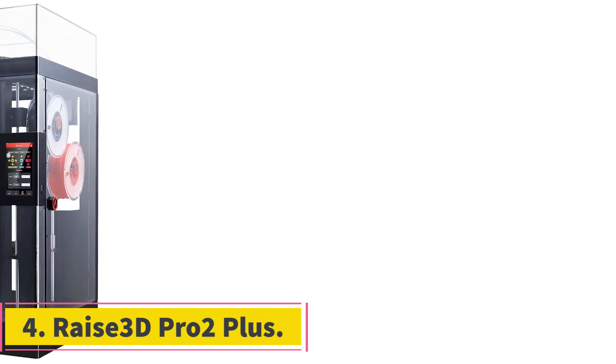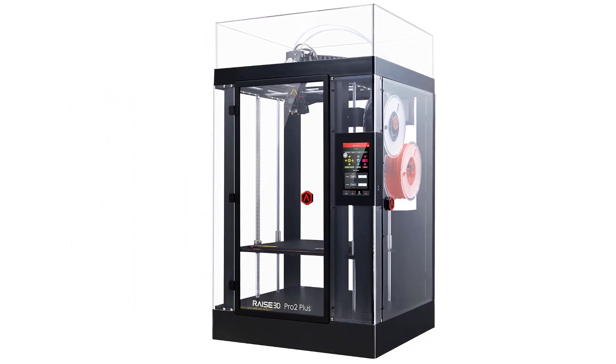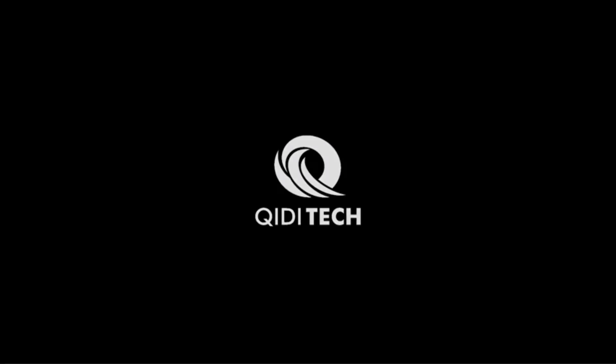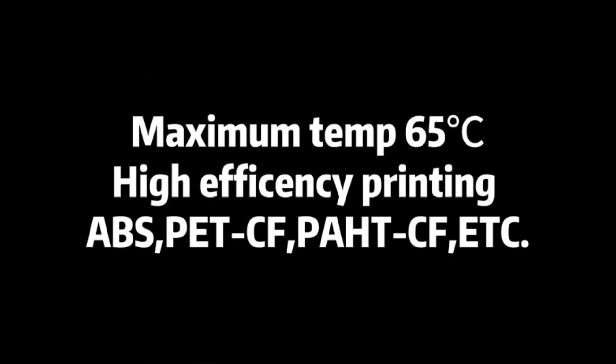Number 4: Raise 3D Pro 2 Plus. Like the Ultimaker S5, carbon fiber printing on the Raise 3D Pro 2 Plus requires a quick swap to a hardened nozzle suitable for abrasive composite materials. It's quick to do, however, and extends the versatility of this already impressive machine.